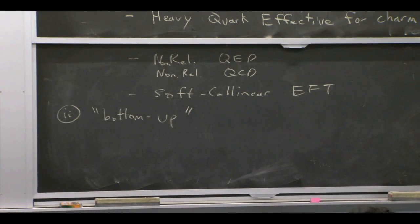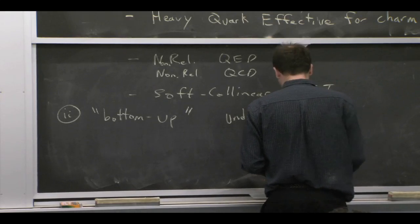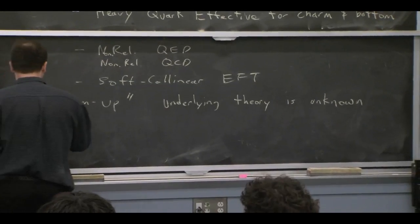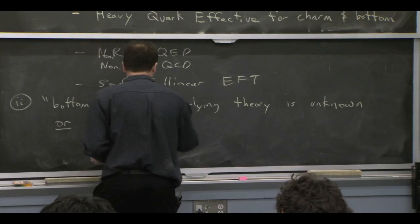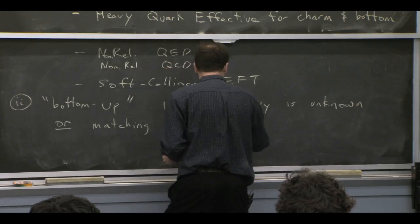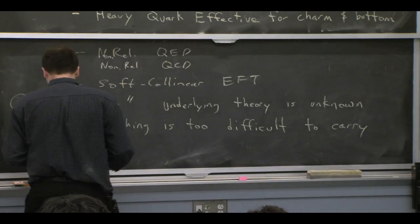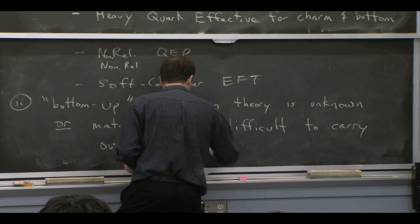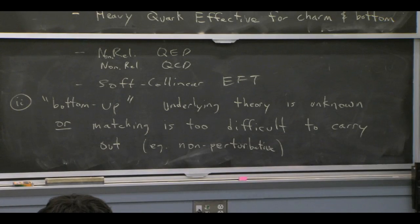The other category is from the bottom up. In this case, you're interested in using effective theory logic, but maybe you don't know the high energy theory — you've never probed it. Or it could be that the high energy theory is known, but doing the matching calculations to integrate out the degrees of freedom explicitly could be very, very difficult — maybe it would be non-perturbative. So if the matching is too difficult, you want to think in this bottom-up framework, where you start with the low energy theory without worrying about what the high energy theory was.